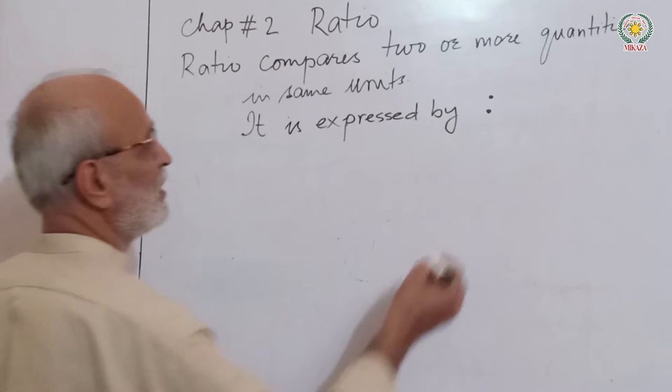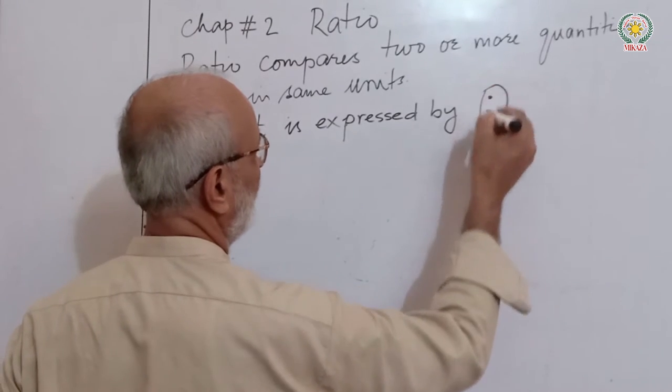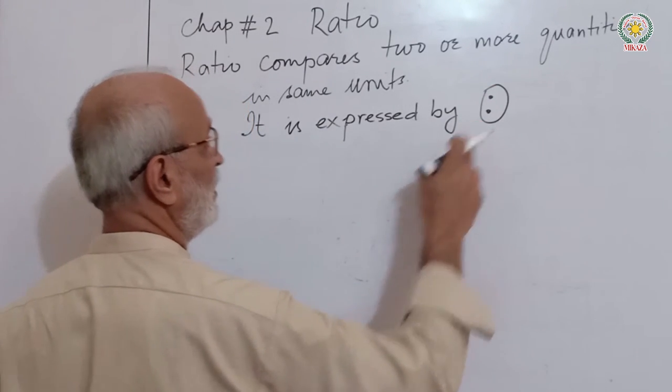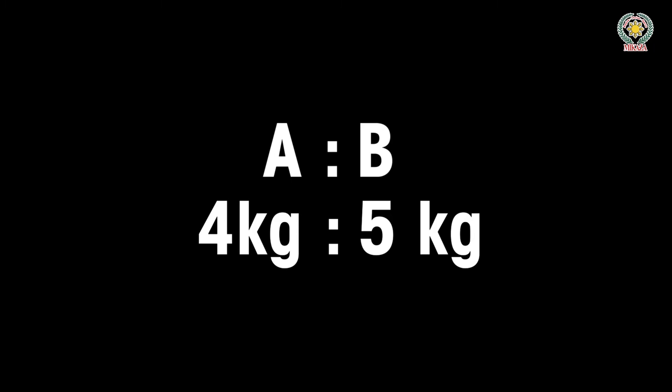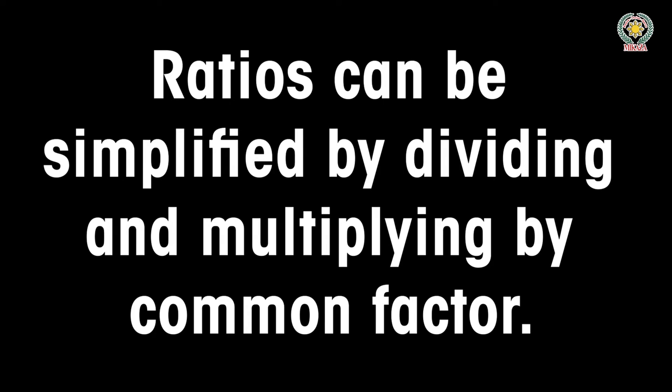Now we will express ratios. A ratio B is written as A:B. For example, if A is 4 kg and B is 5 kg, we say the ratio is 4:5. We can simplify by dividing.